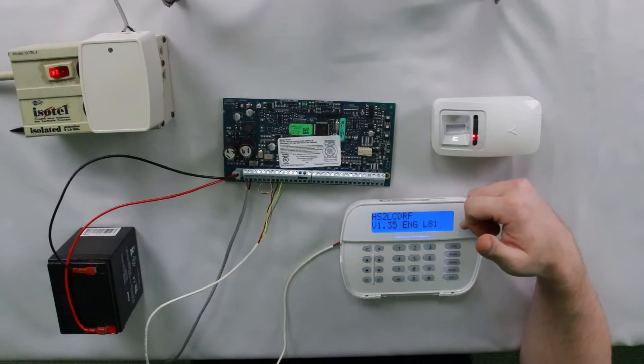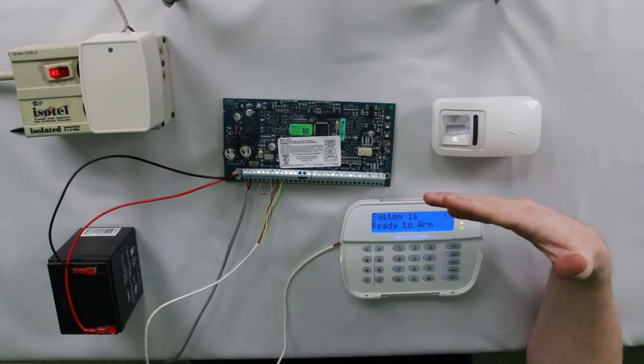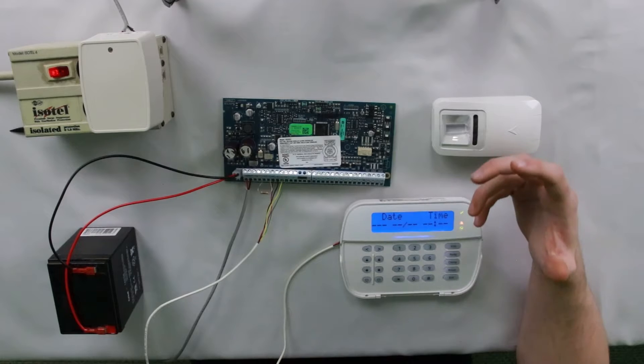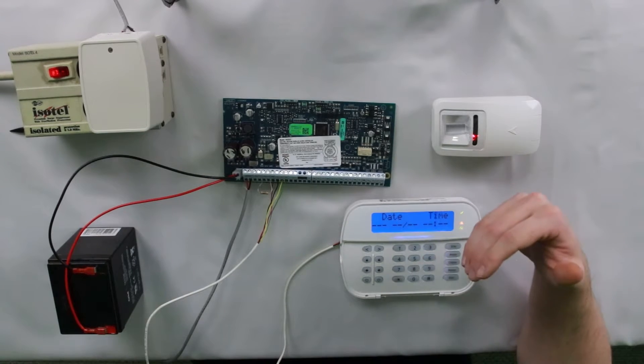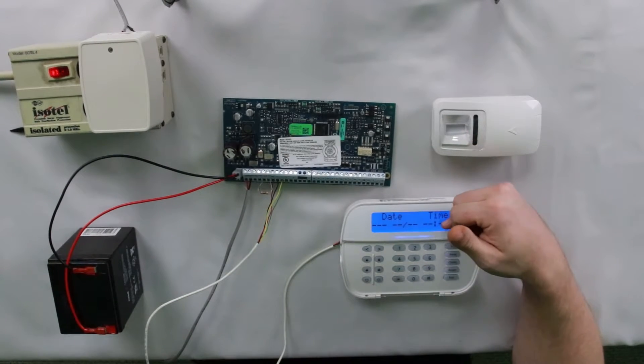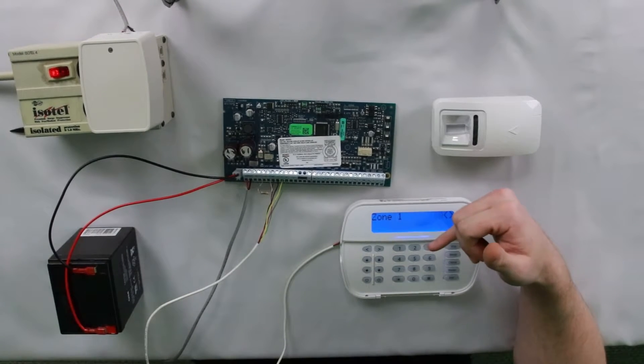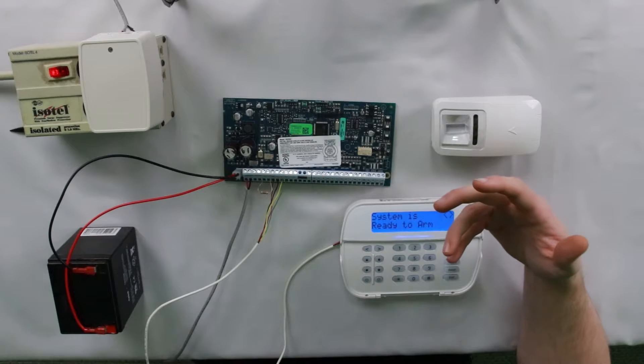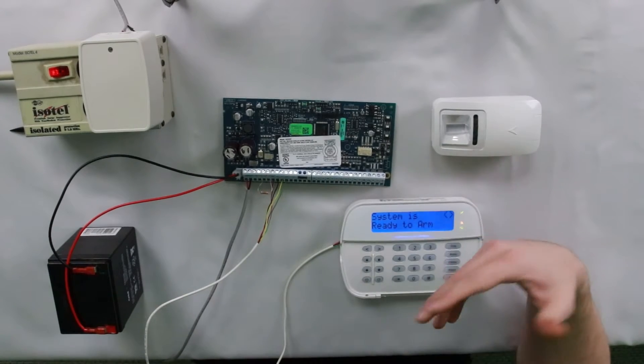After a few seconds, the system will power back up and it will run through and check if there are any new troubles on the system. One thing to keep in mind is any time that you power cycle or reboot your system on a DSC, you will always get a loss of clock signal unless you have Alarm.com service. Alarm.com service will automatically set the time and date for your panel. Just give it a few minutes, it'll set it all up for you. Not a big deal.